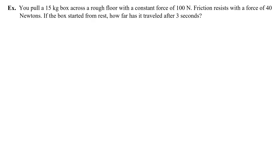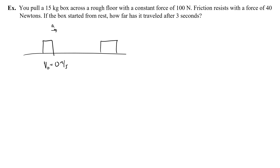Let's take a look at some examples. You pull a 15-kilogram box across a rough floor with a constant force of 100 newtons. Friction resists with a force of 40 newtons. If the box started from rest, how far has it traveled after three seconds? The box starts from rest, so the initial velocity is 0. It will travel some distance with an acceleration to the right, and we want to find x at t equals three seconds, with x₀ equal to 0.